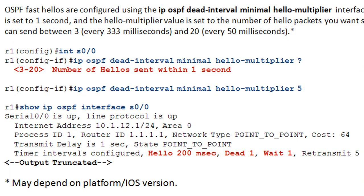With OSPF Fast Hellos you can set the number of hellos sent from every 333 milliseconds up to every 50 milliseconds — so you're sending 20 hellos every second. But regardless of what you do with that, your dead interval is always — and this is important — going to be one second. There's a common misunderstanding here: I was one of those people who thought that by setting the Hello Interval to something like every 50 milliseconds, that would also affect the dead interval so the OSPF relationship would be declared dead after four missed packets, which would be 200 milliseconds. That's not true. It's always going to be one second for the dead timer.